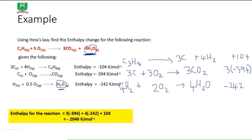Looking back at equation number three, one mole of water requires minus 242 kilojoules of energy. But here we are now producing four moles of water, so we are going to require four times the energy needed for one mole. Therefore the enthalpy must also be multiplied by four to reflect the energy required for the formation of those four molecules of H2O.